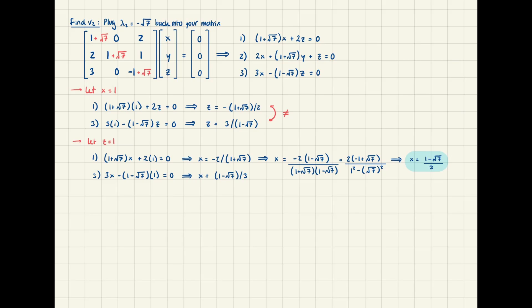Once we rationalize the denominator, both expressions give us x equals one minus root 7 over 3, so we know that's valid. And now we plug our x and z values into equation two to solve for y.